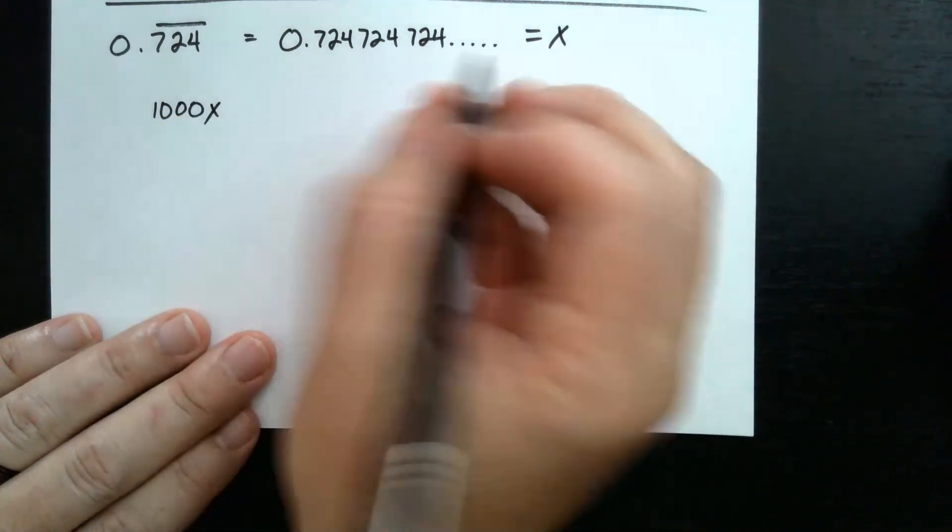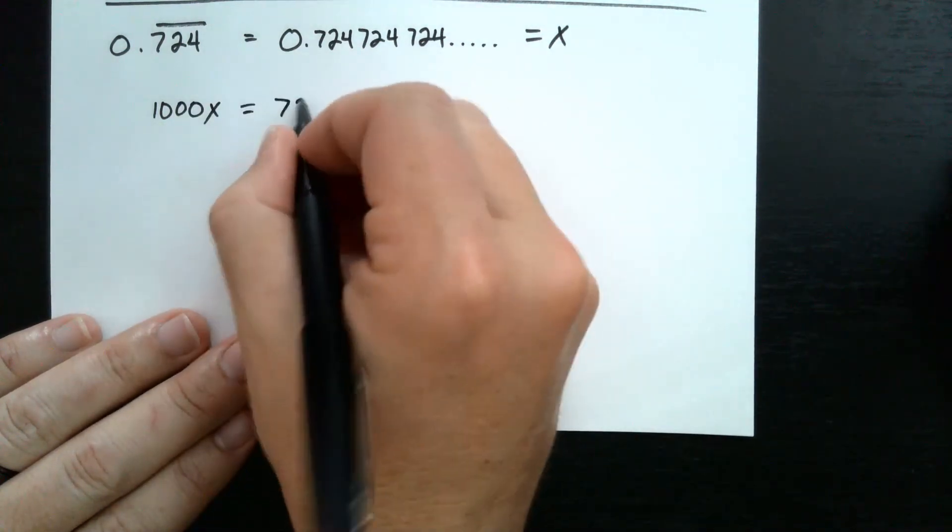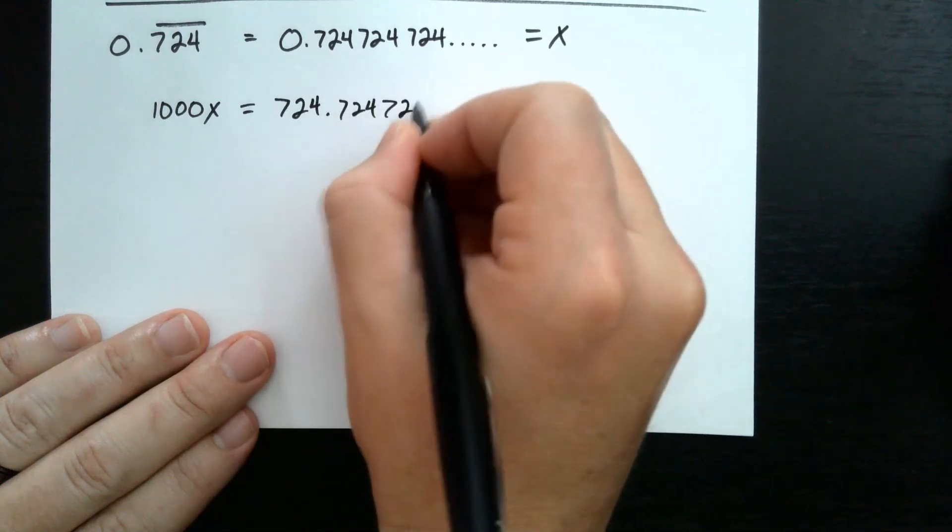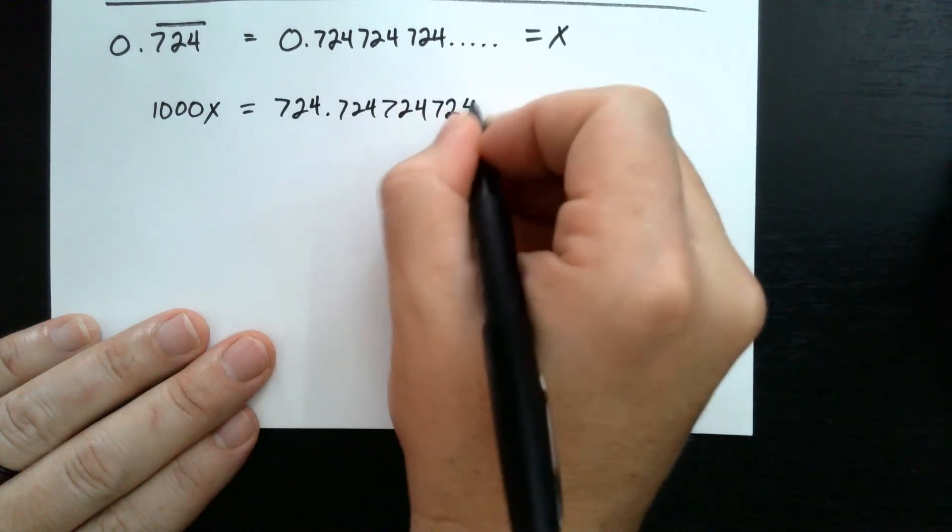So 1,000 times x will be the same thing as 724.724, 724, 724 repeating.